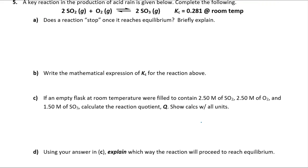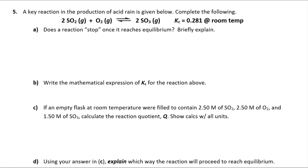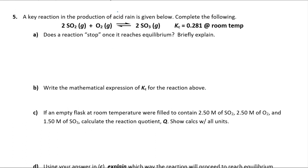The back page deals with applications of equilibrium. This first problem is conceptual: sulfur dioxide and oxygen react reversibly to give sulfur trioxide, with Kc given at room temperature. Looking at the Kc value — it's a really small number — the reaction doesn't favor the products very much; it actually favors the reverse reaction and the reactants. You can know this just by looking at the given Kc value.